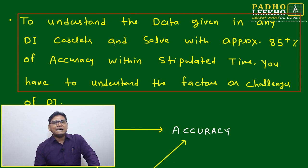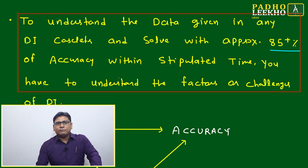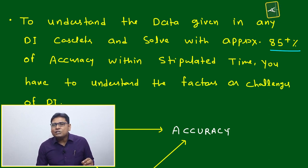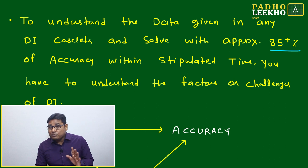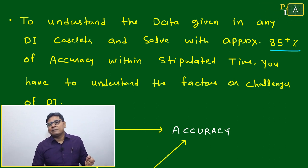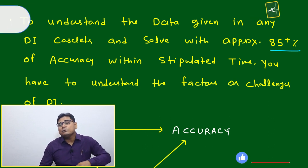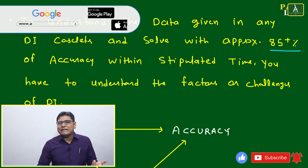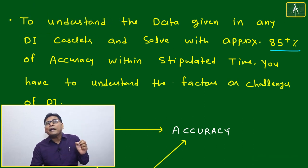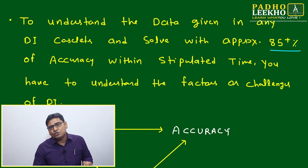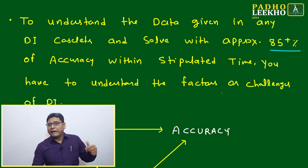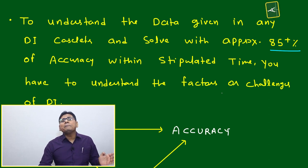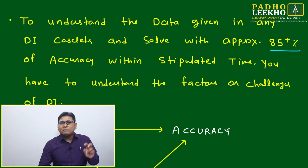To understand the data given in any DI case let and solve it, you need approximately 85% or more accuracy. A minimum of 80 to 85% accuracy is needed — if you attempt 10 questions, at least 8 should be correct. If it falls below that, negative marking will hurt you significantly and you will not get the percentile needed for good colleges. So minimum 80 to 85% accuracy is required; 90%, 95%, or 100% is even better.